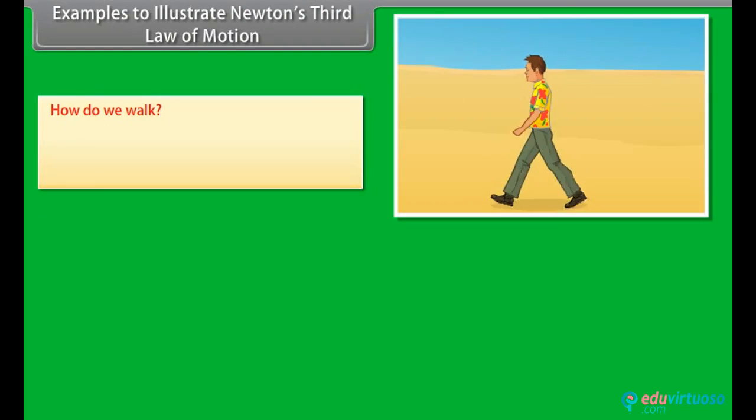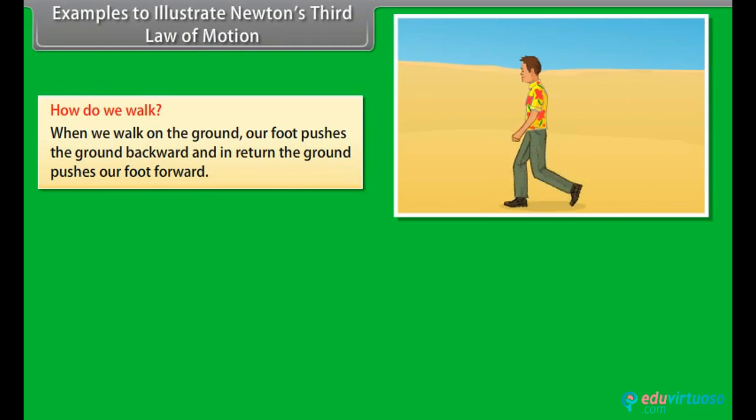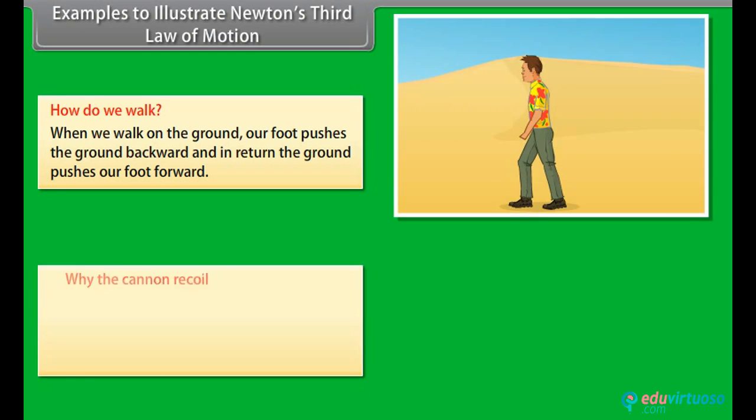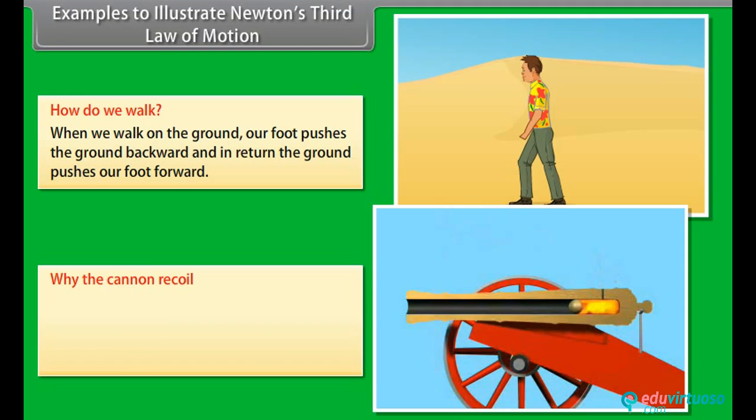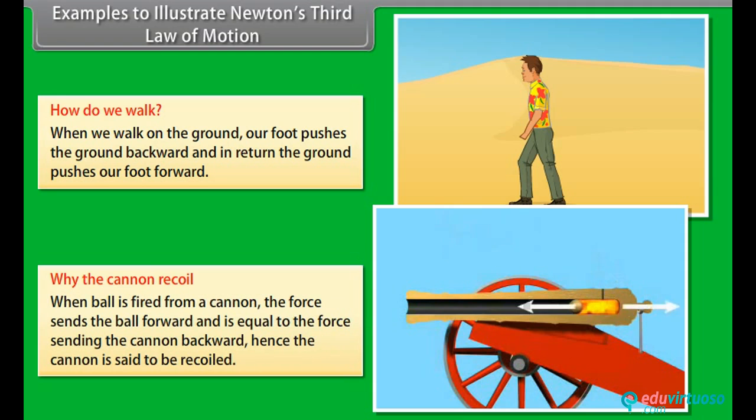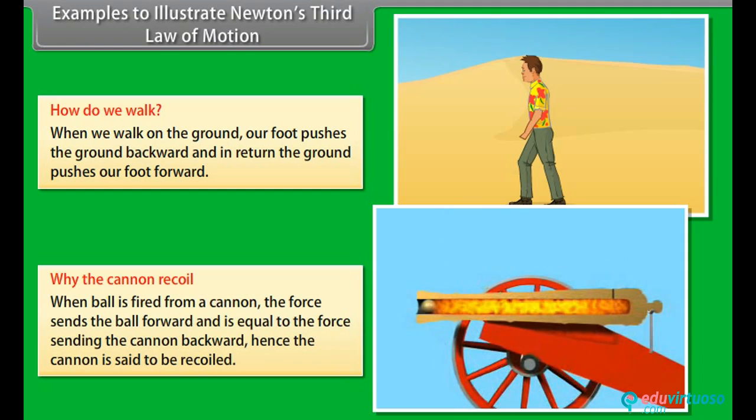Examples to illustrate Newton's third law of motion. How do we walk? When we walk on the ground, our foot pushes the ground backward and in return the ground pushes our foot forward. Why the cannon recoil? When ball is fired from a cannon, the force sends the ball forward and is equal to the force sending the cannon backward. Hence the cannon is said to be recoiled.